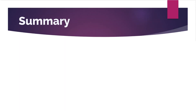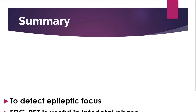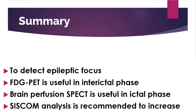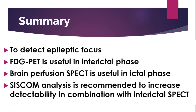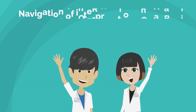An overview of the usefulness of nuclear brain scans in epilepsy was presented. The main purpose of neuronuclear imaging is to detect epileptic focus. Glucose metabolism PET is useful in the interictal phase. During the ictal phase, brain perfusion SPECT is useful, and the focus detection rate can be increased by SISCOM analysis in combination with the interictal SPECT. Thank you for listening.